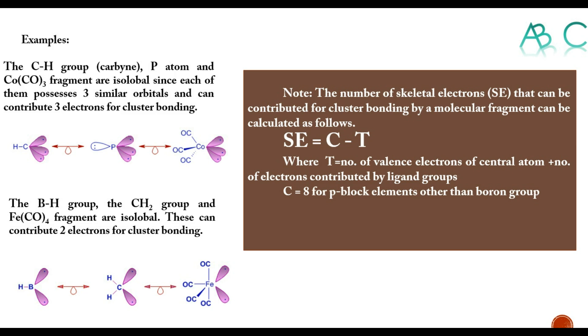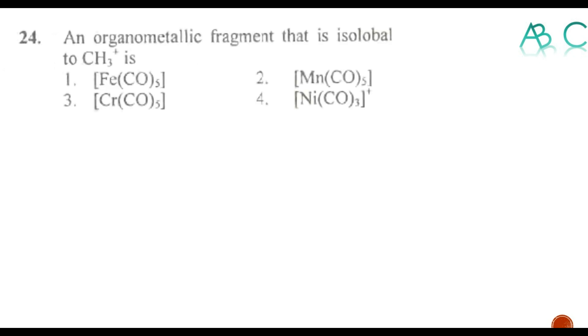For the fragments we are taking, for C for p-block elements other than boron it is 8, and for boron group it is 6. For transition metal species it is 18, and for late transition metal species with 18 electron species it is 18, and for some species it is 16 stable electron population.